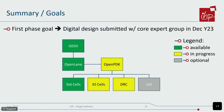The first phase goal of the OpenPDK project is to have a digital design submitted with core expert groups in December of this year. We already have standard cells, OpenLane in GDS is available as a flow, and we are working on the open PDK. The I/O cells are in development, and also the DRC deck. LVS is an optional thing that is not really required. And this is our first phase goal.